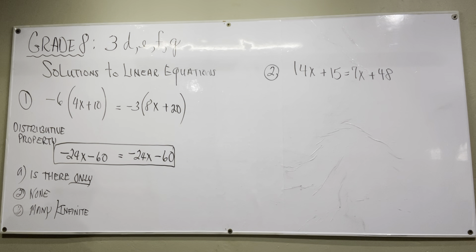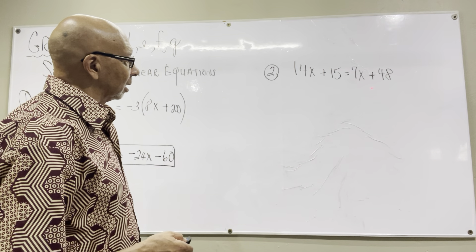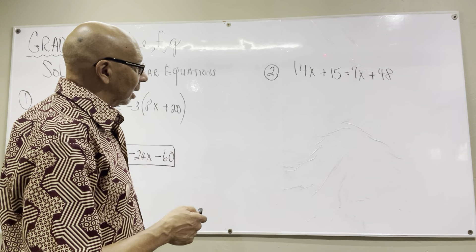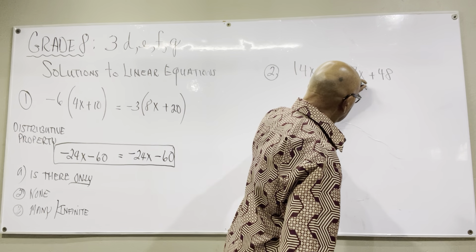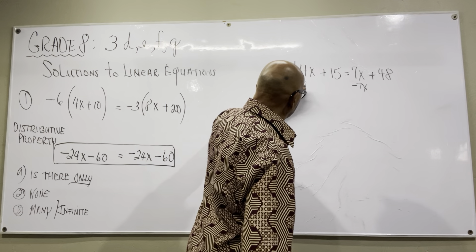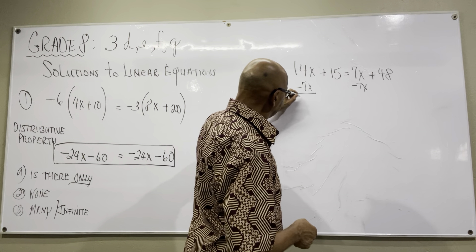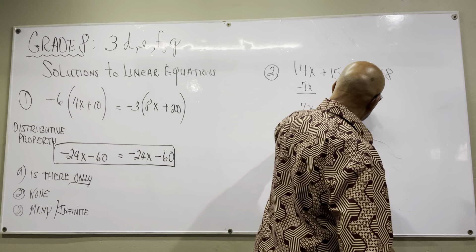Now let's try the same process with Example 2: 14x plus 15 equals 7x plus 48. To solve this, I have to get the x's together, so I'll subtract 7x from both sides. That cancels out the 7x on the right, leaving me with 7x plus 15 equals 48.